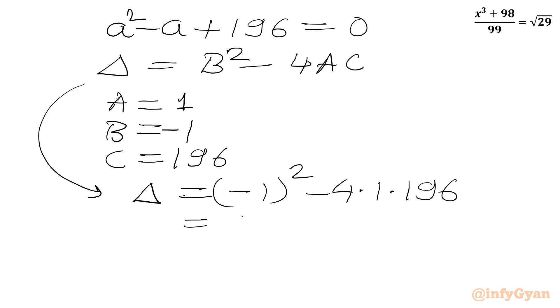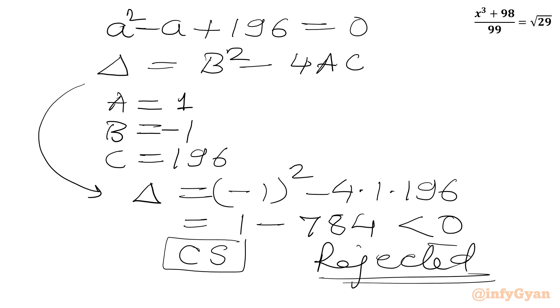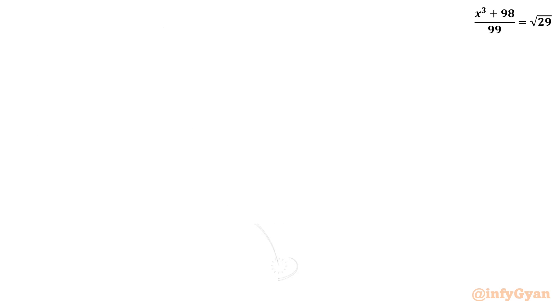So I can write discriminant equals negative 1 whole squared minus 4 times 1 times 196. So this will come out 1 minus 784. The value is negative. We will get complex solutions. So we can reject easily this quadratic equation as we are looking for real solutions only. So we will accept only x minus y equals negative 1.